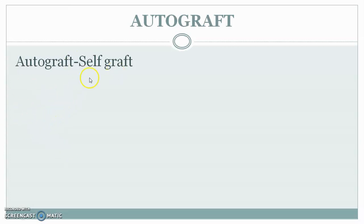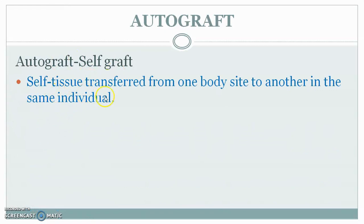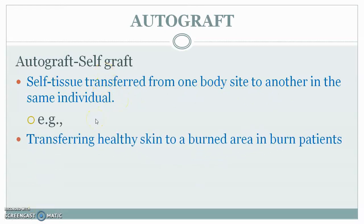There are some terminologies associated with transplantation. The first is autograft, meaning self-graft — self tissue transferred from one body site to another in the same individual. Only tissue, not the entire organ, is transplanted. For example, transferring healthy skin to a burned area.